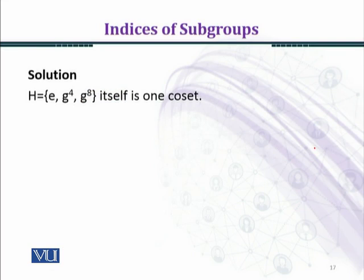Now, there are a total of 12 elements in the group and 3 elements in the coset. So the index value will be the order of G over the order of H, that is 12 over 3, which is 4. It means that we shall obtain 4 cosets.